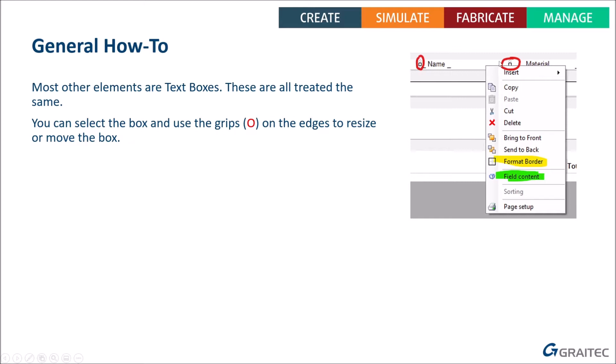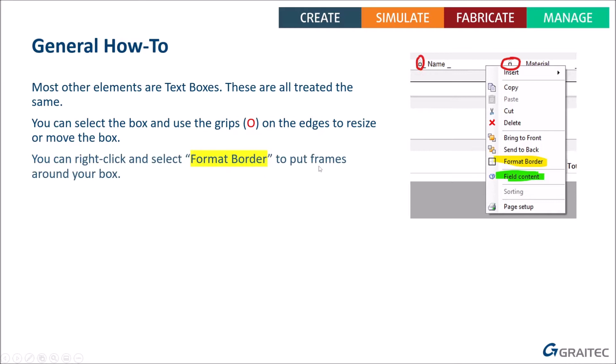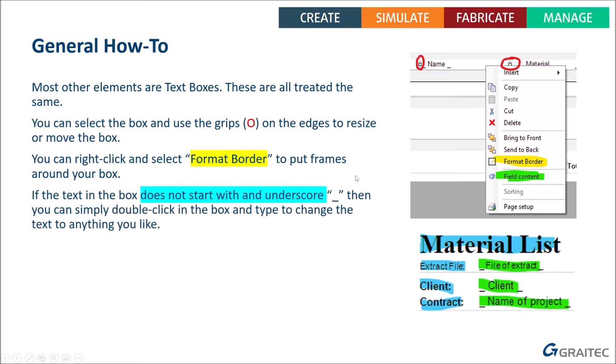Nearly every other box on the list is a text box. You can resize those boxes using the white grip handles — click and drag to resize. Or if you click just off a grip, you can reposition the box to move it around. If you want to put a frame around a box, such as for a heading, right-click on the box and choose Format Border from the menu. You'll get a dialogue where you can set different border styles on each edge.